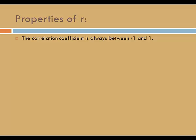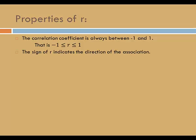Firstly, the correlation coefficient is always between negative 1 and 1. The sign of the correlation coefficient indicates the direction of the association. A positive value of R indicates a positive association, while a negative value of R indicates a negative association.